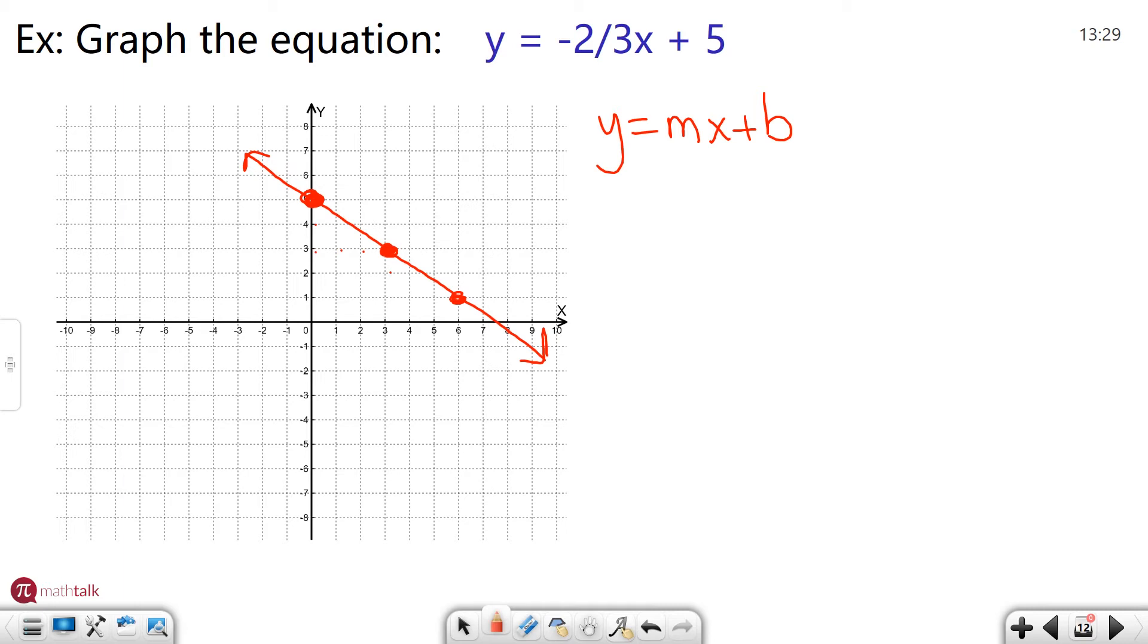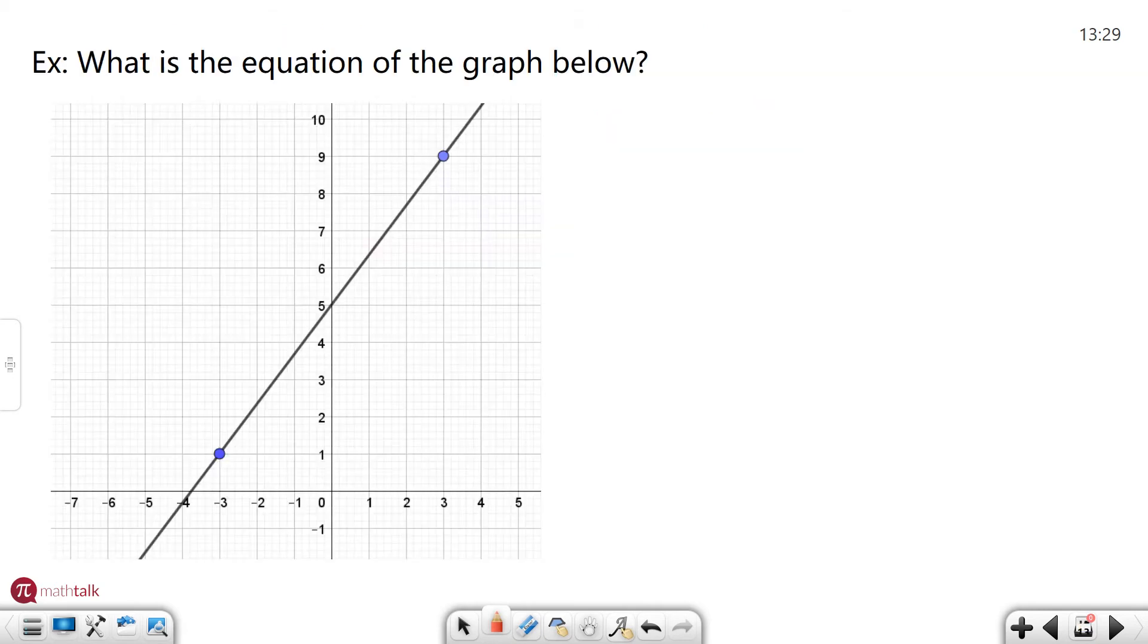So let's look at a couple examples in doing the reverse where they give us the graph and we have to find the equation. So one of them looks like this. What is the equation of the graph below? So in this case I like to kind of draw out my formula y equals mx plus b. All I really need to do is figure out what the b value is and what the slope is and then the y and x are just y and x. So the b value I think is the easiest one. I just figure out where it crosses the y-axis. In this case that is 5.